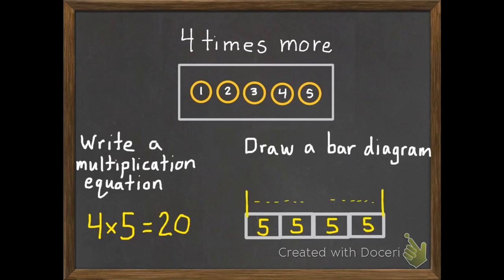And I need to find my total distance. So I have five, ten, fifteen, twenty. And now I have a bar diagram.